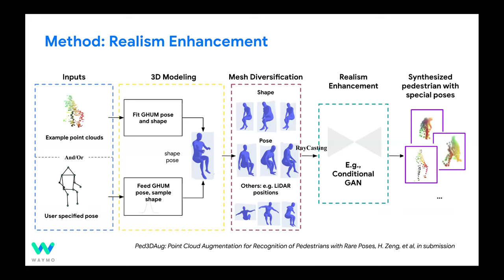The field is moving fast and you can do this more end-to-end. For example, you can take the two types of inputs, train a diffusion model, and it will give you synthesized pedestrians with specific poses. But in general, this describes one of the workflows we use.